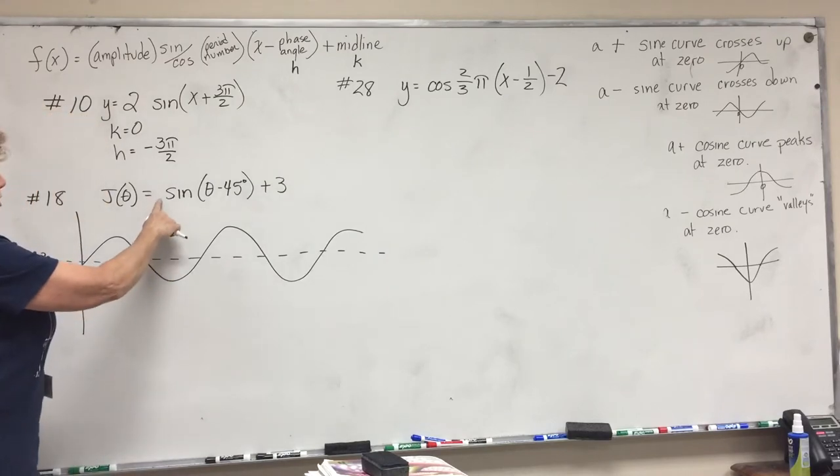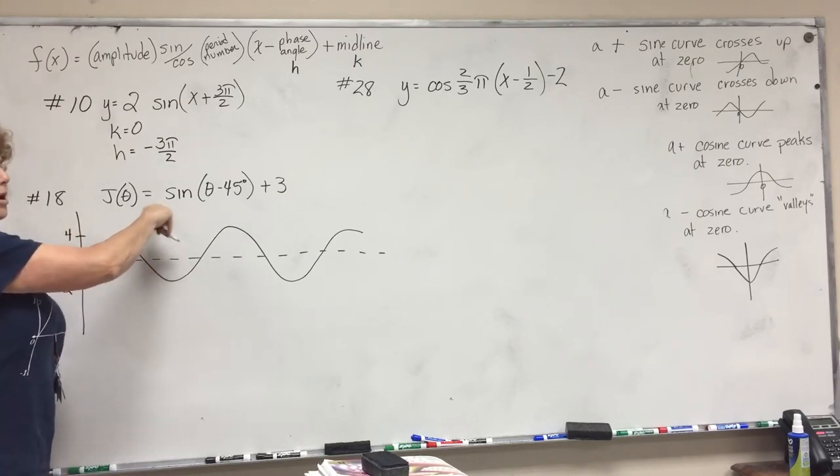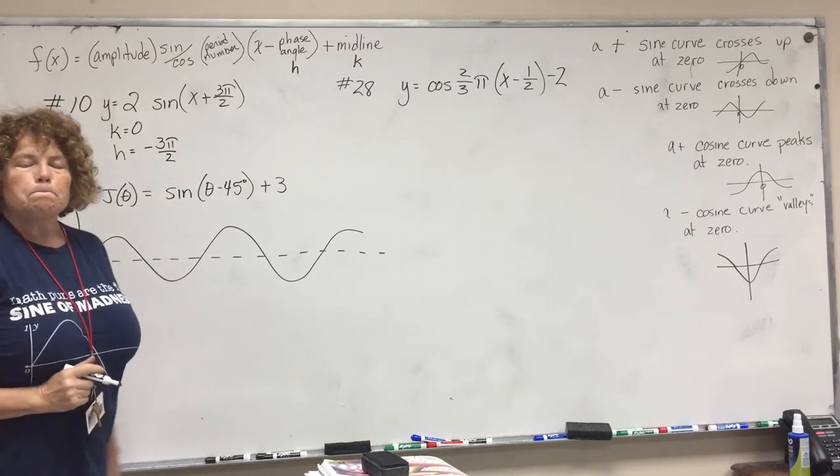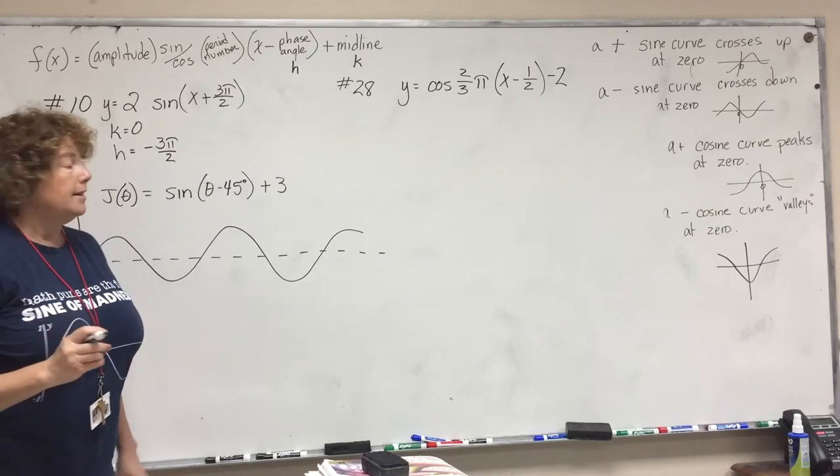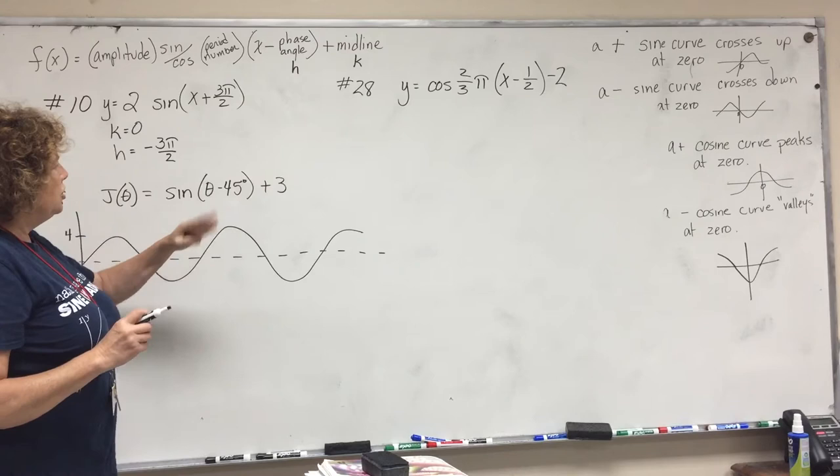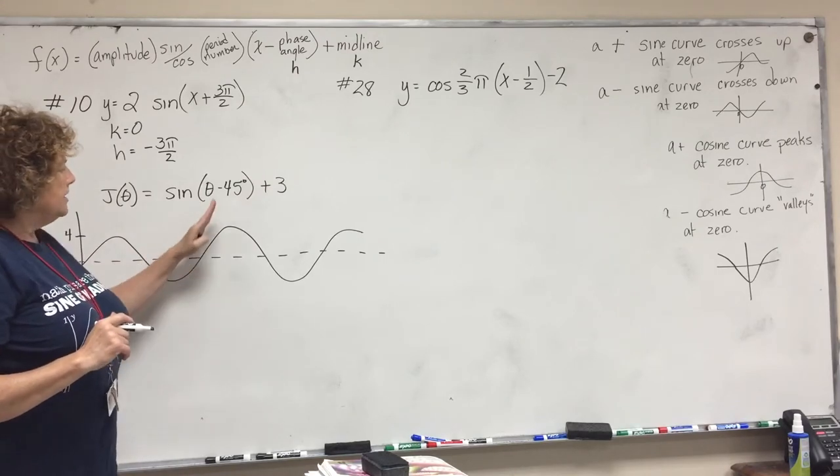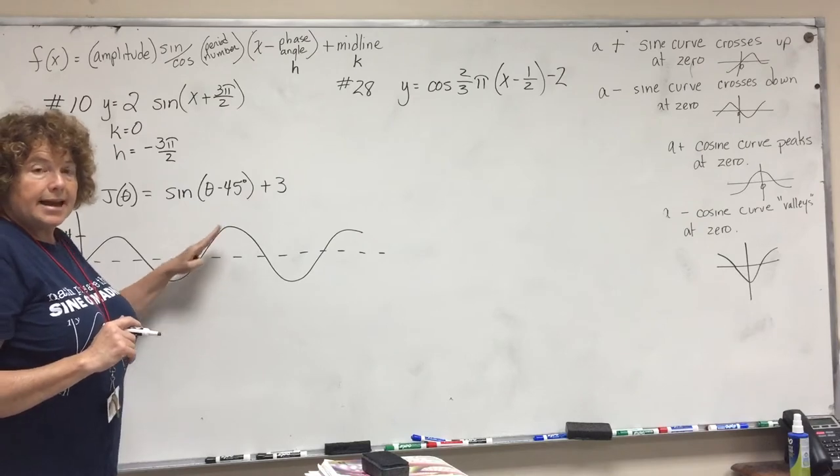Our amplitude is 1, so that means this would be 1 up from our midline, this would be 1 down from our midline. So now we've labeled it so that we know what our amplitude is.